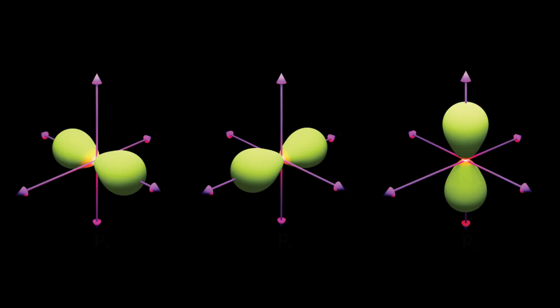Next up, the p orbitals. These start appearing from the second energy level and have a more complex shape, like a figure eight or dumbbell. There are three p orbitals at right angles to each other, which can each hold two electrons, for a total of six electrons at the p orbitals of any energy level. These orbitals are a bit farther from the nucleus, so the electrons in them have more energy.